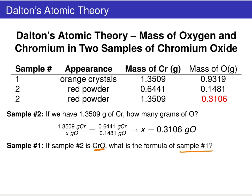We're using the same data table, now filled in, and using the fact that sample two is CrO to figure out what the chemical formula is for sample one. Once again I'd like you to pause the video and see if you can work through this problem.